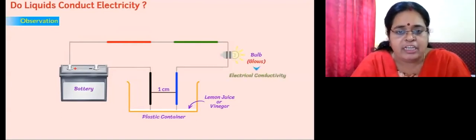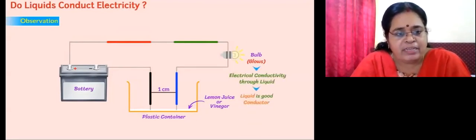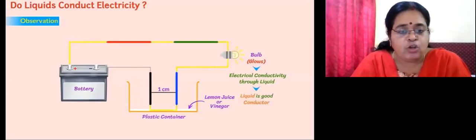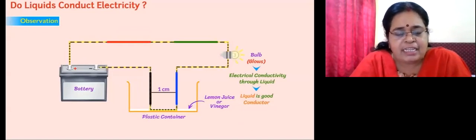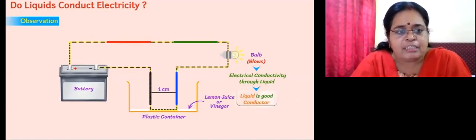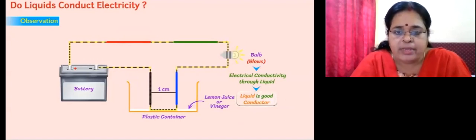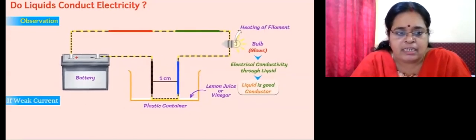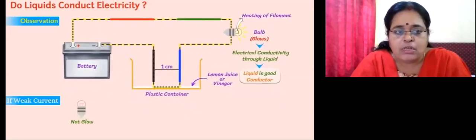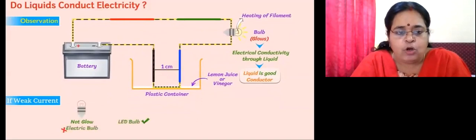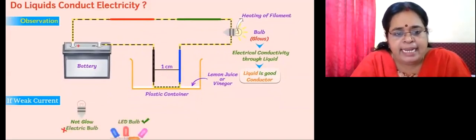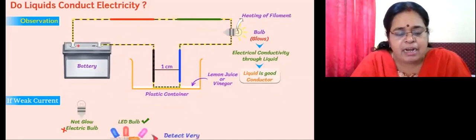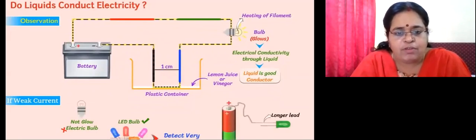But if the bulb does not glow, the wires may not be in proper order or the liquid may not be a good conductor. However, in this activity the bulb is glowing because current is passing through the wires. We can conclude that the liquid is a good conductor. But if weak current is passing through, the electric bulb will not glow — but LED bulbs will glow. LED bulbs can run even with weak current and can detect very weak currents, which is why we use LED bulbs for our experiments.